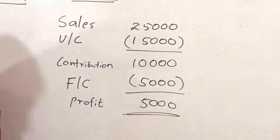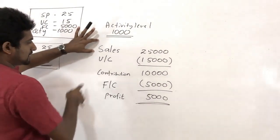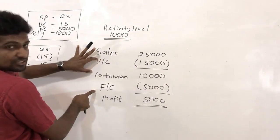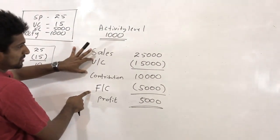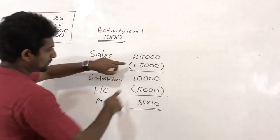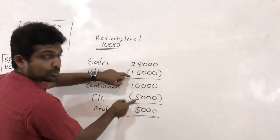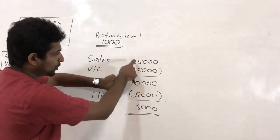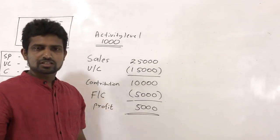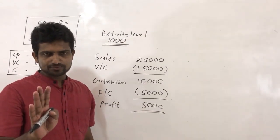Sales minus variable cost is contribution; contribution minus fixed cost is profit. Looking at it another way: sales is 25,000, variable cost is 15,000, and fixed cost is 5,000, so total cost is 20,000. Then 25,000 minus 20,000 gives a profit of Rs.5,000.